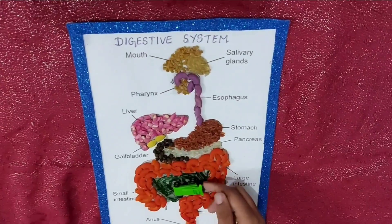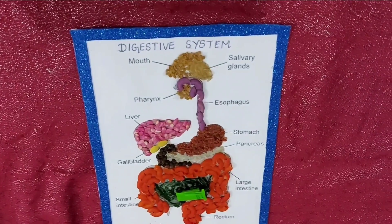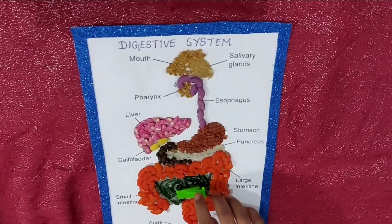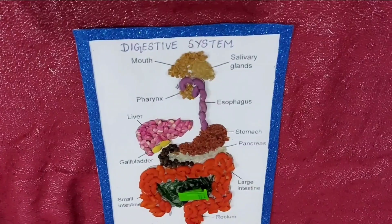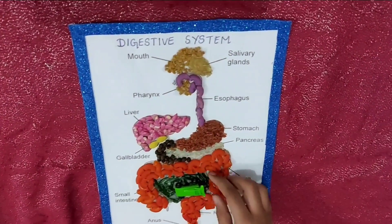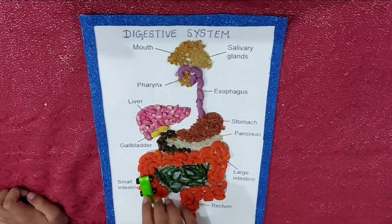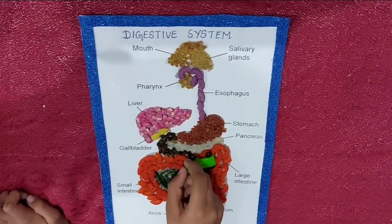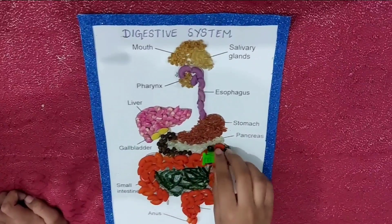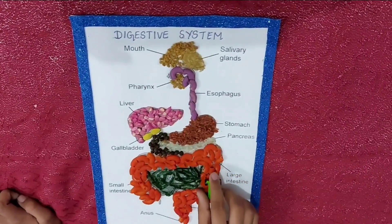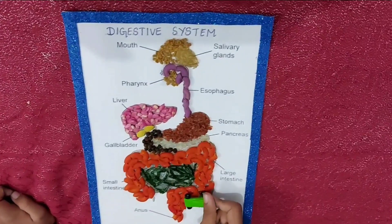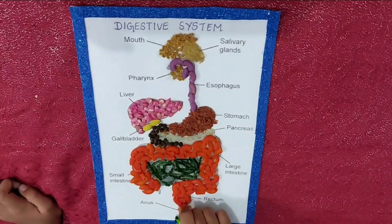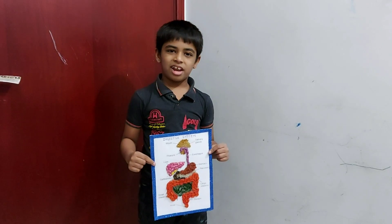The nutritional components of food are then absorbed by the blood. The rest of the food that cannot be digested goes into the large intestine, where water from the undigested food is absorbed. This undigested food is then removed from our body as waste through the anus.